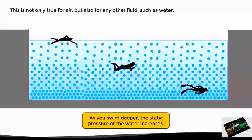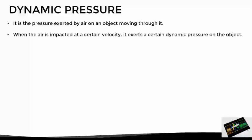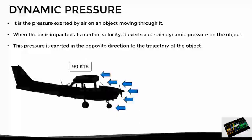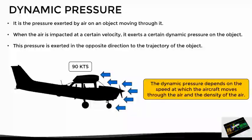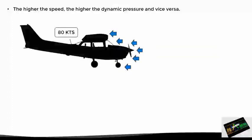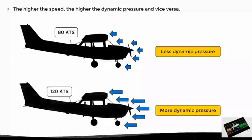Now, having seen and understood the definition of static pressure, let's move on to the dynamic pressure. This is the pressure that air exerts on an object moving through it. So when an object impacts the air at a certain speed, that air exerts a certain pressure on that object, which is called dynamic pressure. This pressure is exerted in the opposite direction to the trajectory of the object. This dynamic pressure depends directly on the speed at which the aircraft is moving and also on the density of the air, which means that as we fly faster we will have a greater dynamic pressure. For example, if we fly at 80 knots, we will have less dynamic pressure than if we fly at 120 knots.